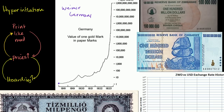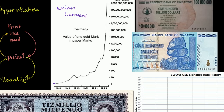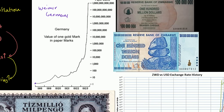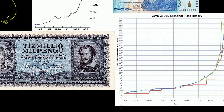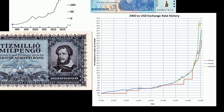The other famous example is Zimbabwe, from 1980 until 2009. Once again, printing money like mad, and some of their productive capacity went away. This right here is a 100 trillion Zimbabwe dollar. And this chart shows the Zimbabwean dollar relative to the US dollar. Once again, this is a logarithmic scale — this is 10 to the 30th power.